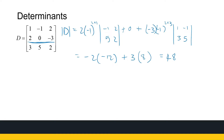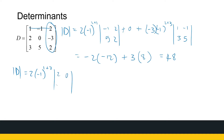Let's verify by calculating this same determinant using column 3. That gives 2 times minus 1 to the power of row 1 plus column 3, times the determinant of the submatrix with entries 2, 0, 3, 5. Then plus minus 3 times minus 1 to the power of row 2 plus column 3, which is 2 plus 3, times the determinant of the submatrix with entries 1, minus 1, 3, 5.